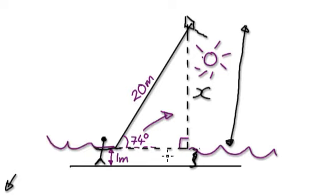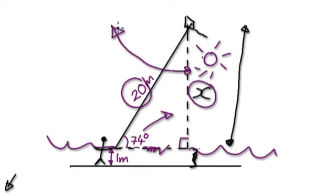What's not in play? Well, the adjacent is not in play because we are given this and we want to know this. So the only one is opposite and hypotenuse. So we will need sine.